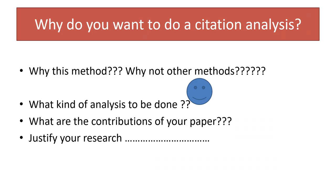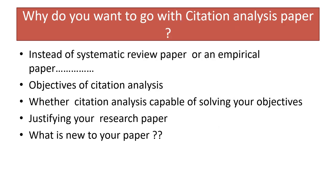One should justify why they want to do a citation analysis rather than an empirical paper or a review paper. You should definitely justify why this method, why not another method, what kind of analysis is to be done, and what the contributions of your paper are. Otherwise your paper will be biased and will not be accepted by any journal. So justification is very important — you should justify why you go for citation analysis rather than an empirical paper and put forward your objectives clearly.